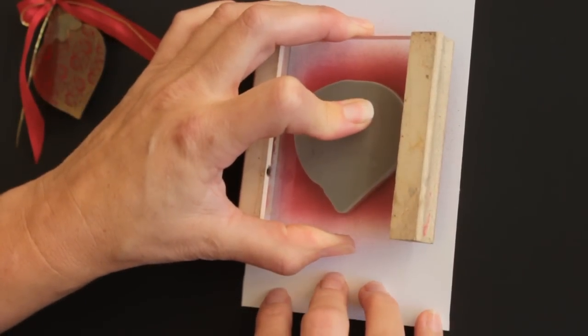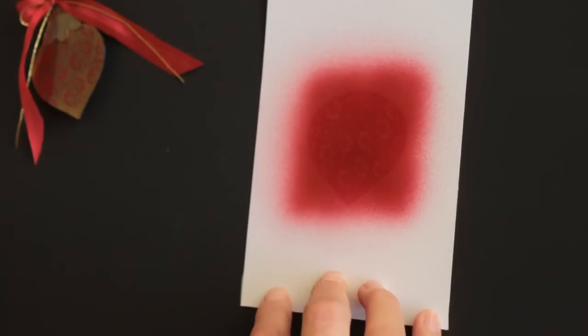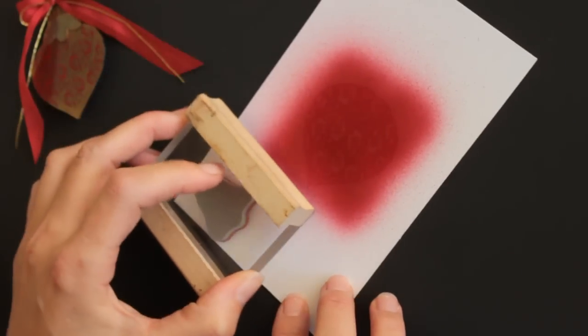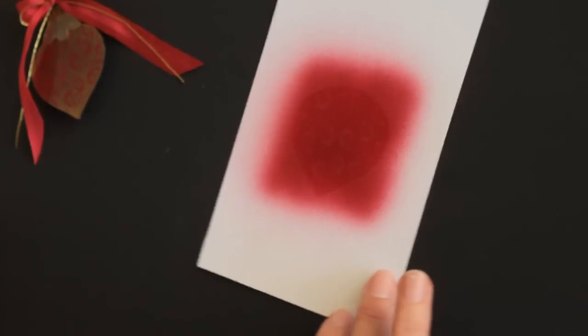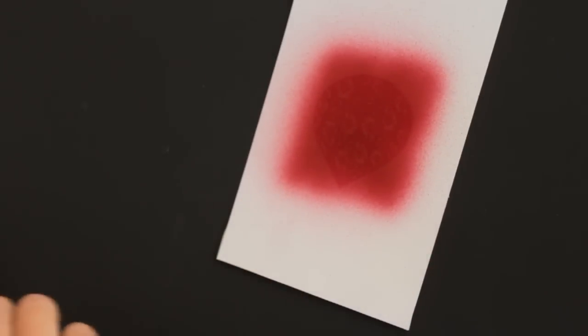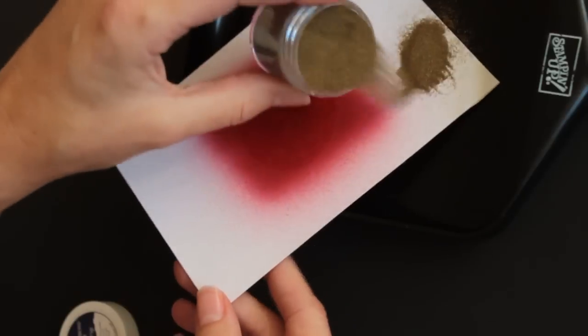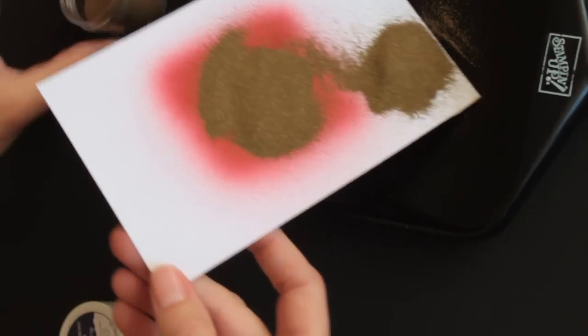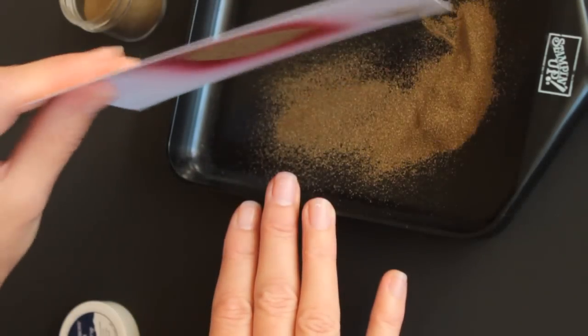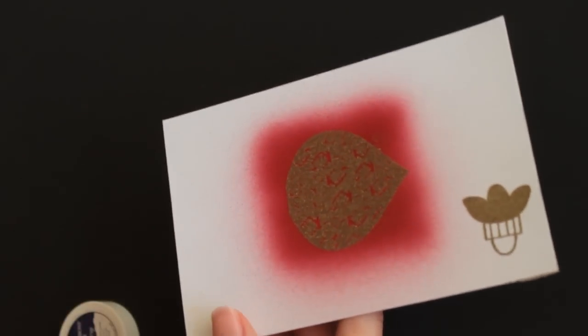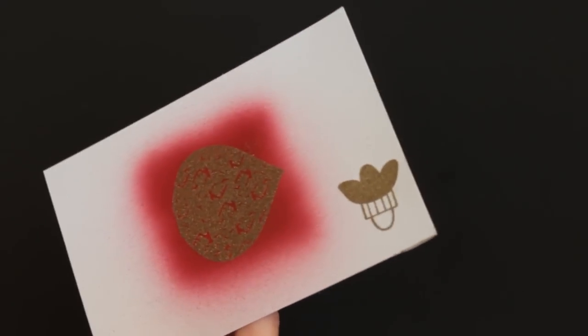Stamp it with embossing ink. This stamp comes in two pieces. Stamp my handle down here. Add gold embossing powder over it. Tap off the excess and heat until it melts.